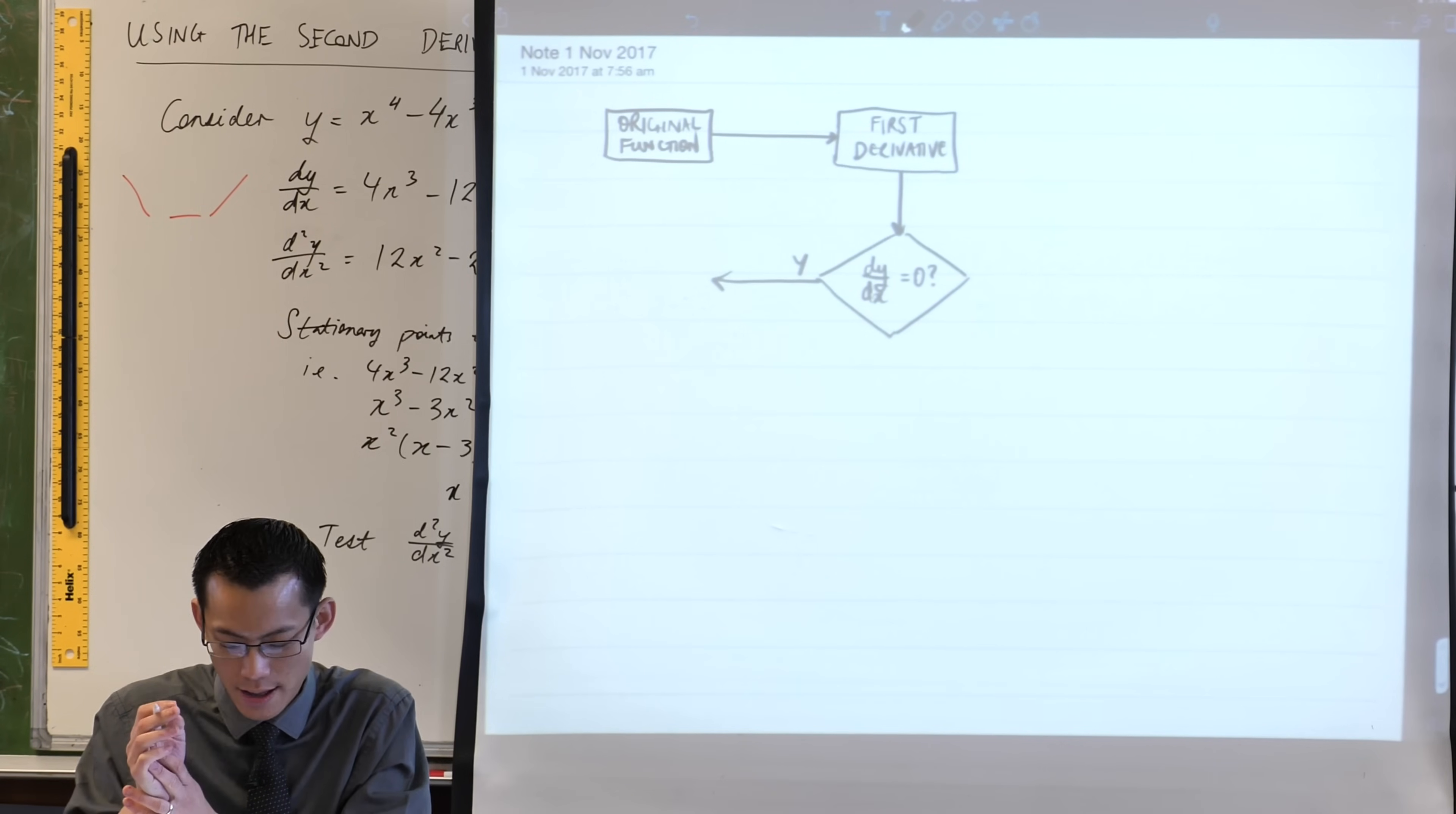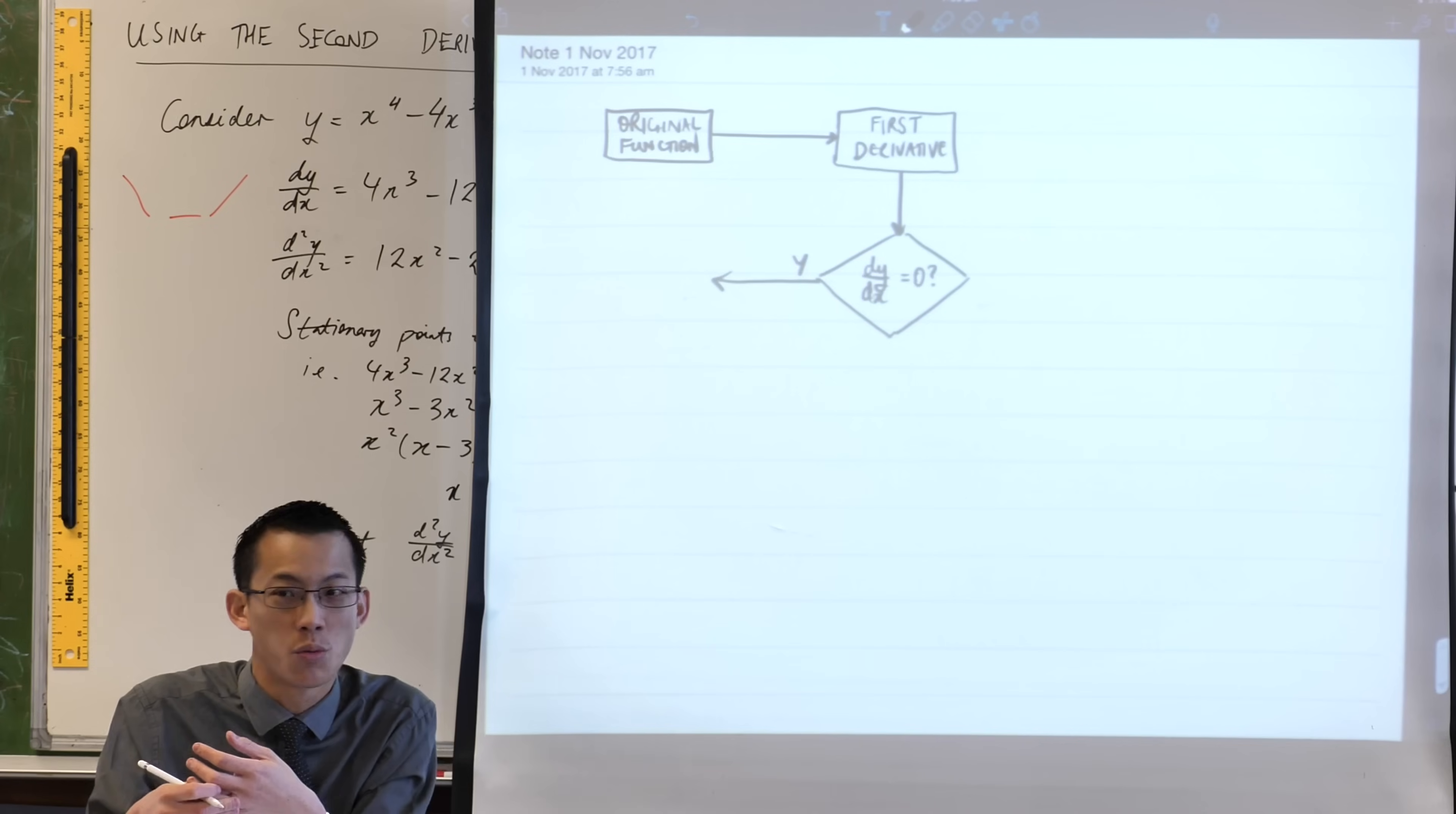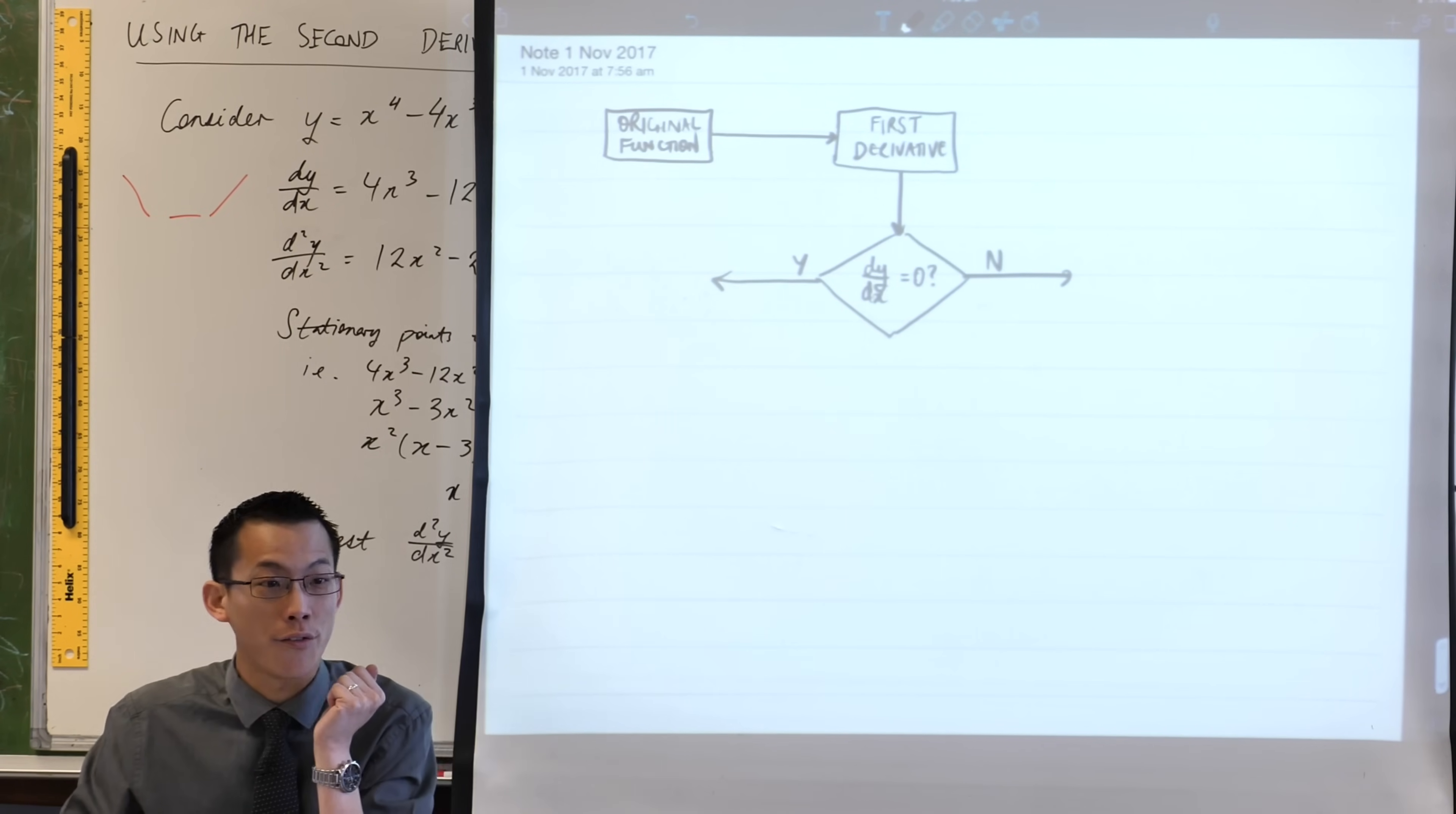One of two things will happen. You may find some places where the first derivative equals zero. There's a yes branch that goes from here. However, it's important to mention we're deliberately giving you questions where there are stationary points, but that's not always the case.